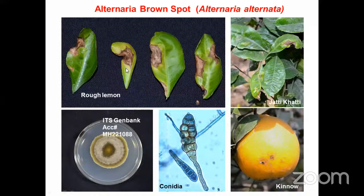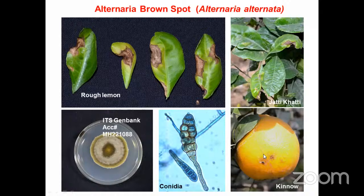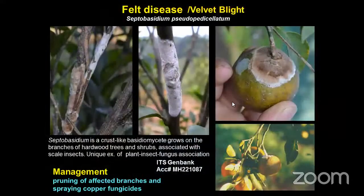Alternaria brown spot is mainly a problem in nursery stages where rough lemon is grown. Such infections have been observed in several rough lemon nurseries, and to a limited extent in Kinnow mandarin and even Nagpur mandarin. It is not a major pathogen but one should be alert to manage it.